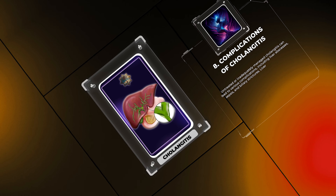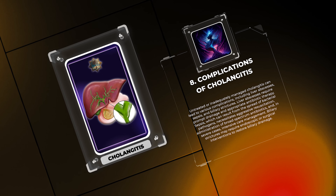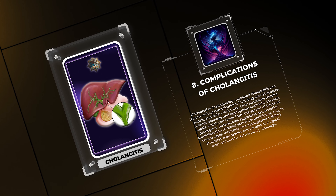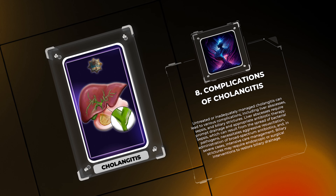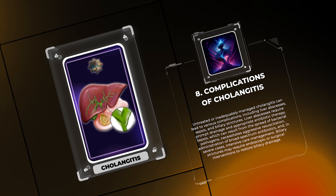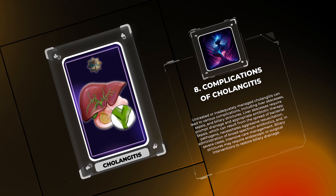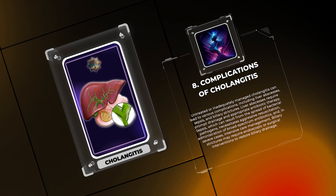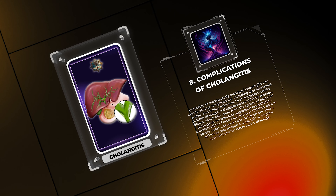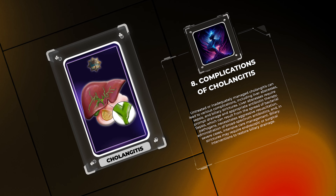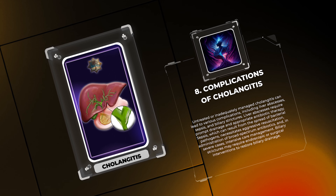Untreated or inadequately managed cholangitis can lead to various complications, including liver abscesses, sepsis, and biliary strictures. Liver abscesses require prompt drainage and appropriate antibiotic therapy. Sepsis, which can result from the spread of bacterial pathogens, necessitates aggressive resuscitation, administration of broad-spectrum antibiotics, and, in severe cases, intensive care management. Biliary strictures may require endoscopic or surgical interventions to restore biliary drainage.